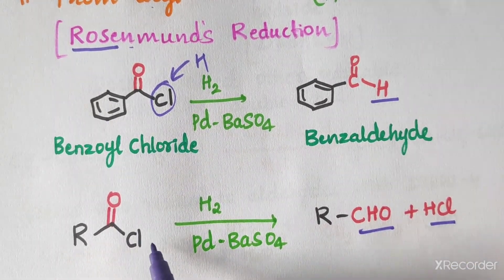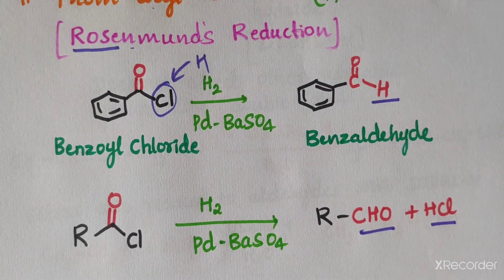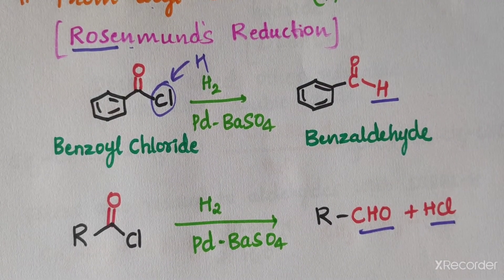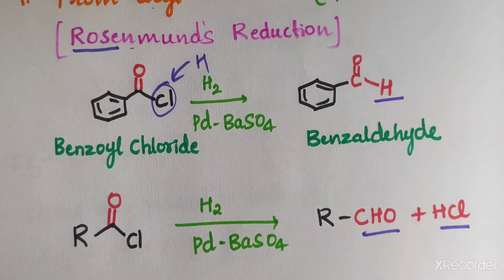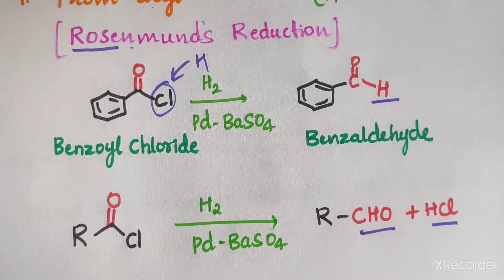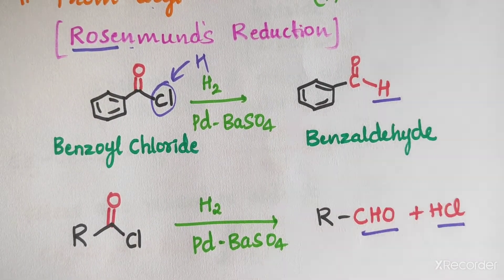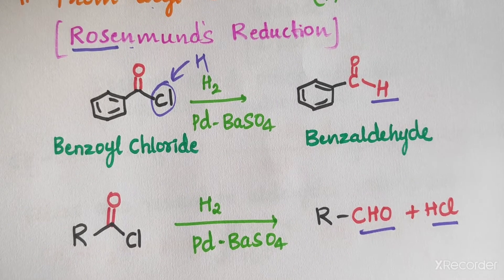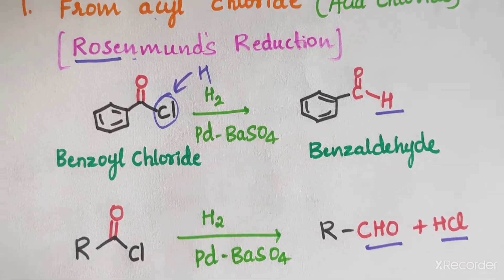This is very important for your examination. From acyl chlorides you can obtain aldehydes (RCHO) and HCl. This reaction is called Rosenmund's reduction reaction.